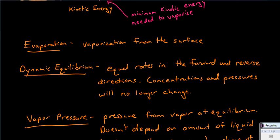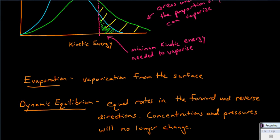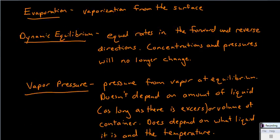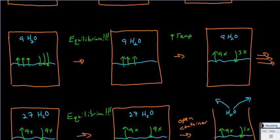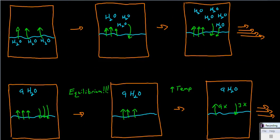So let's draw out the description of vapor pressure. Vapor is a gas which normally at room temperature is a liquid or solid.